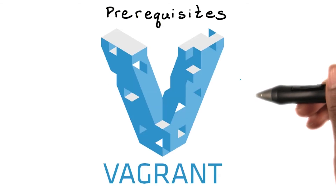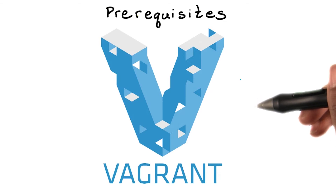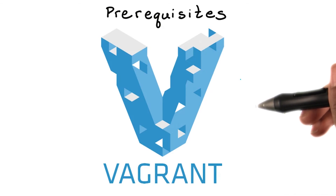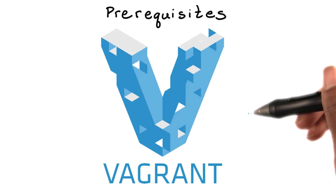I highly recommend using a Vagrant environment for this course. Vagrant will allow you to work in a virtual machine with a shared folder you can access on your host computer. This way, if anything accidentally gets messed up in the Vagrant machine, it won't affect your host machine. A link to downloading and installing a Vagrant machine, preinstalled with all of the necessary libraries for this course, can also be found in the instructor notes.